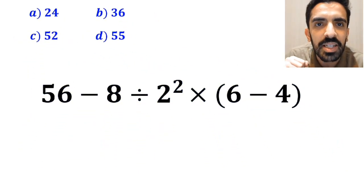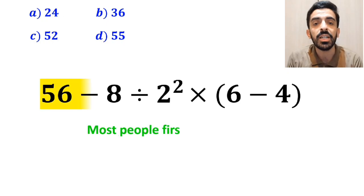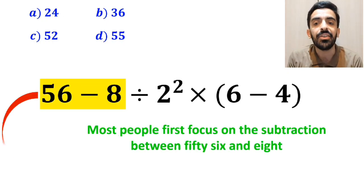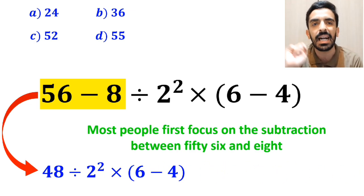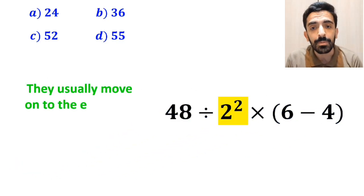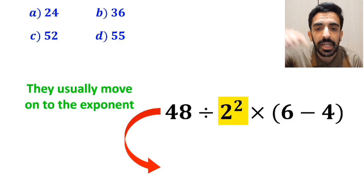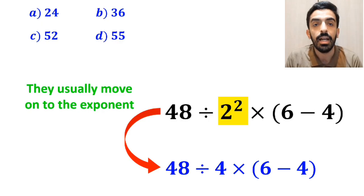Let's go step-by-step and solve it together. To solve this question, most people first focus on the subtraction between 56 and 8, and they rewrite the whole expression as 48 divided by 2 squared, then times 6 minus 4 in parenthesis. In the next step, they usually move on to the exponent and write this expression in the simplified form: 48 divided by 4 multiplied by 6 minus 4 in parenthesis.